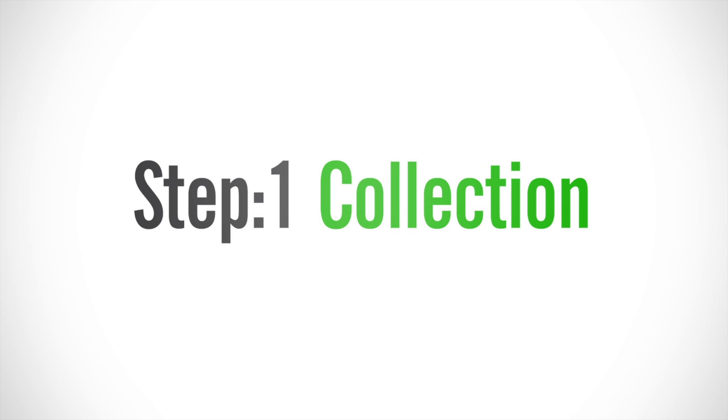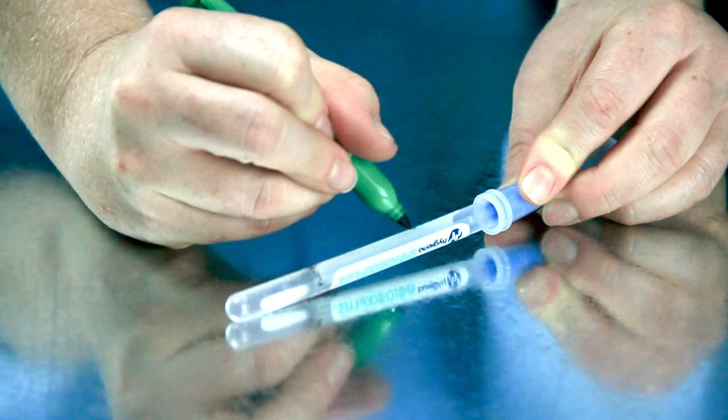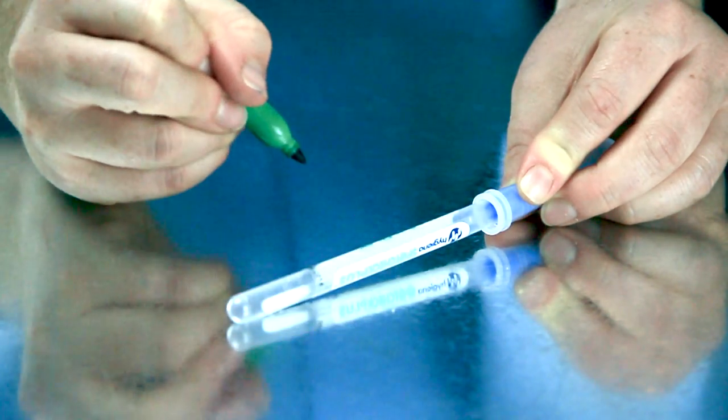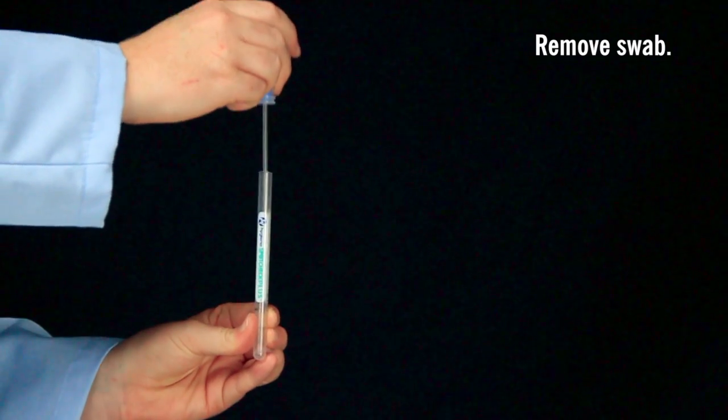SpotCheck Plus is a two-step test. The first step is collection. Write the test location on the label for easy identification. Remove the swab from the tube.